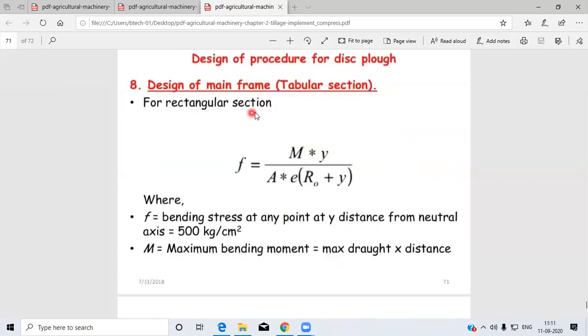Eighth point is design of main frame tubular section. For rectangular section, bending stress is given by f = (M × y) / [A × e(R₀ + y)], where f is the bending stress at distance y from neutral axis, taken as 500 kg/cm².